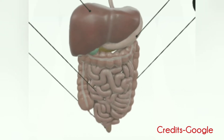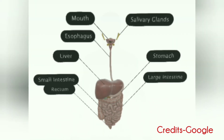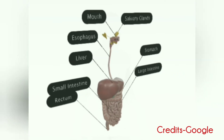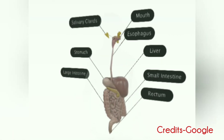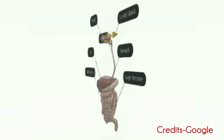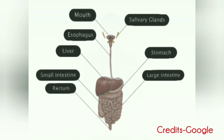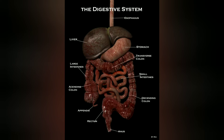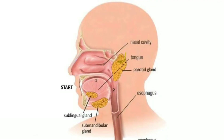Now I am going to discuss the functions of the digestive system. Digestion involves the breakdown of food into smaller and smaller components until they can be absorbed and assimilated into the body. The process of digestion has three stages. The first stage is the cephalic phase of digestion, which begins with gastric secretions in response to the sight and smell of food.